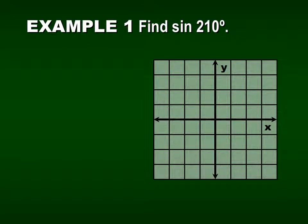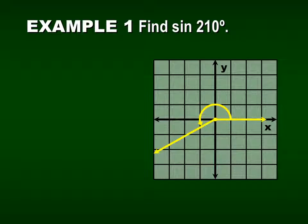Let's find sine of 210 degrees. So 210 degrees — I first have to figure out what quadrant that's in. 210 is more than 180 and less than 270, so it's in the third quadrant. My reference angle is formed by the terminal ray and the x-axis, so I need to figure out what that small angle is and draw a reference triangle.